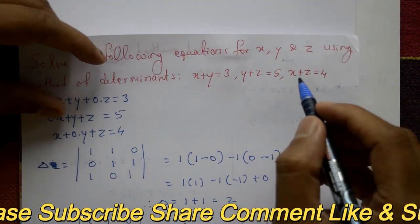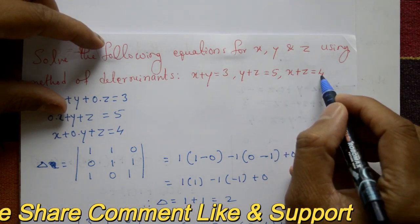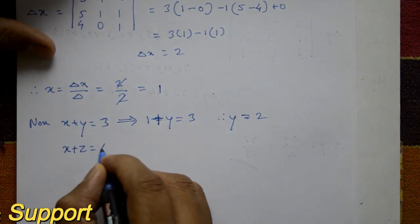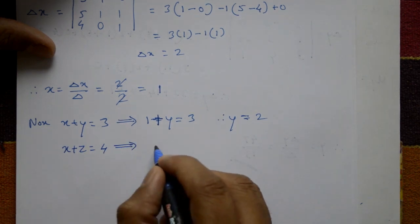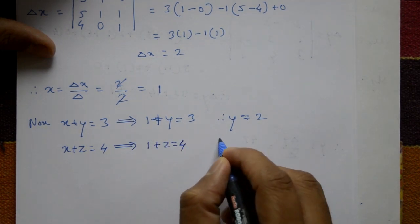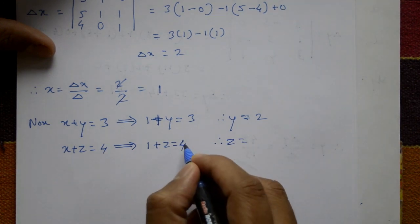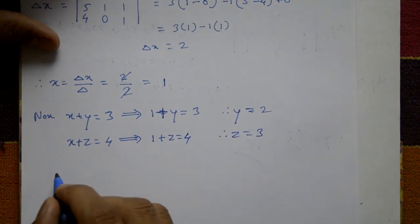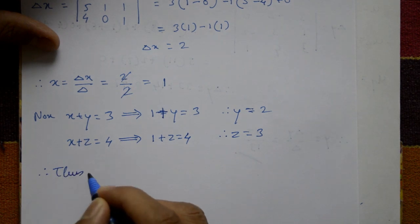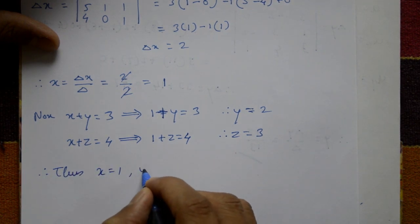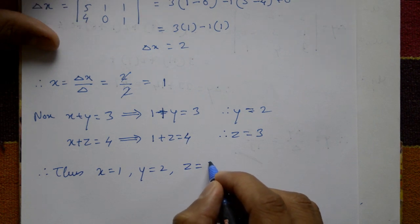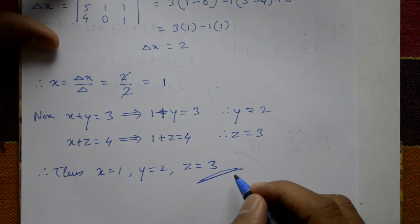Now consider the third equation: x plus z equals 4. Substituting x equals 1: 1 plus z equals 4, therefore z equals 4 minus 1, so z equals 3. Thus the required values are x equals 1, y equals 2, and z equals 3.